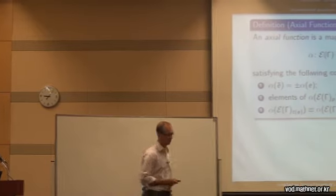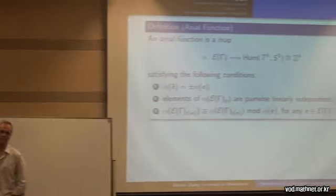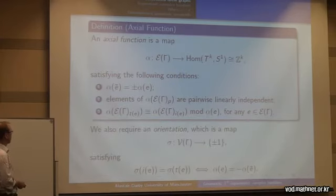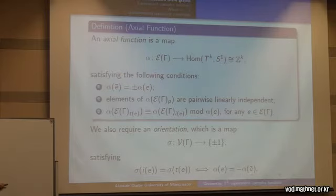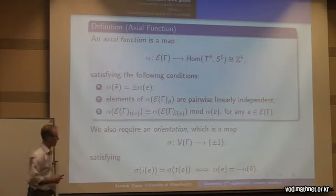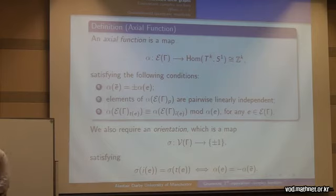The third condition is a slightly complicated one which Shintaro talked about extensively in his talk yesterday, so I'm going to skip over it. We also require an orientation, originally defined in Maida, Masuda and Panov's paper, where we assign to each vertex either plus or minus one, satisfying the condition that on an edge the two signs are the same if and only if we have the normal GKM condition where α(e) is the negative of α(ē).